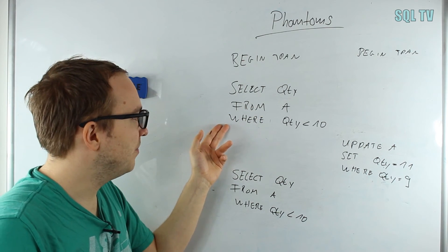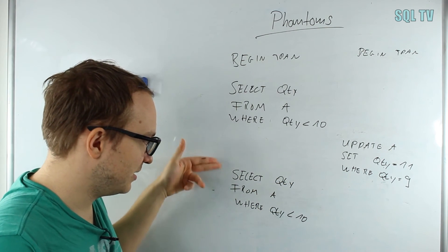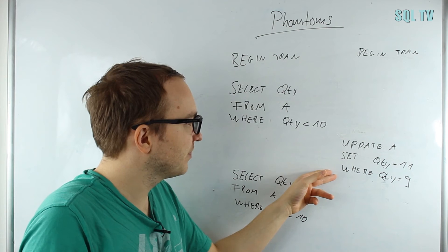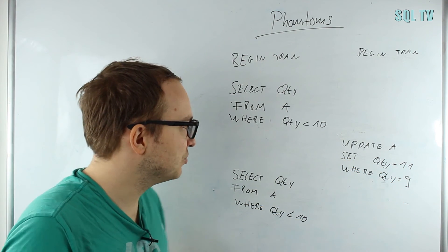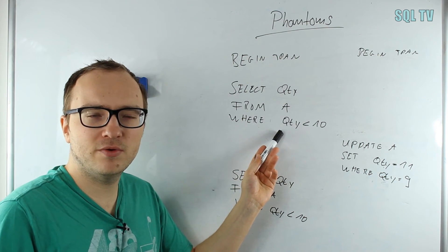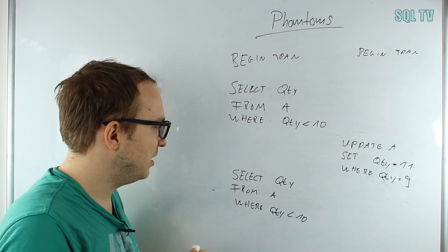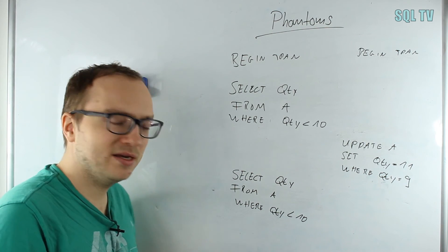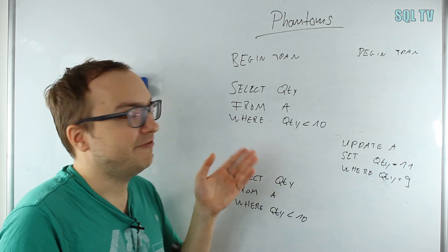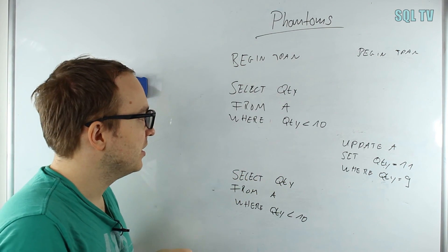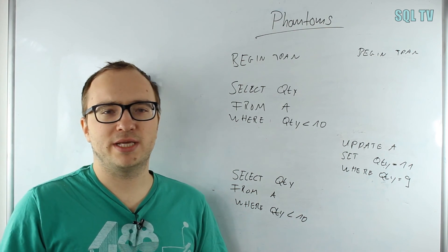For instance, we have a transaction that selects all quantities from table A where quantity is less than 10, and it does this again. In between, we update and set the quantity to 11 where the quantity was 9. Obviously all rows that were displayed here with quantity equals 9 are not displayed here anymore. The number of rows shrank and is less here, and this is the problem of the phantom or phantom read problem.